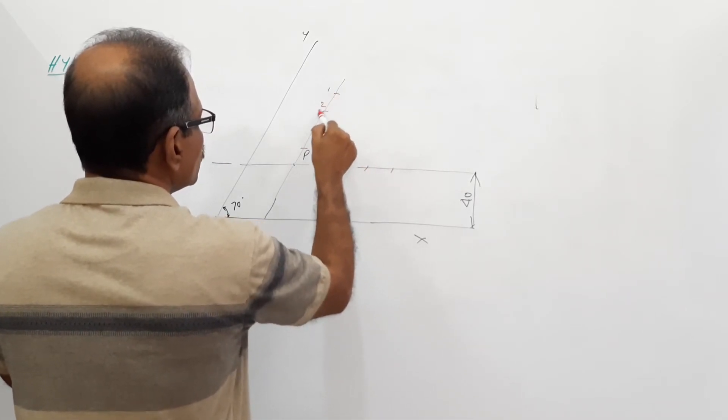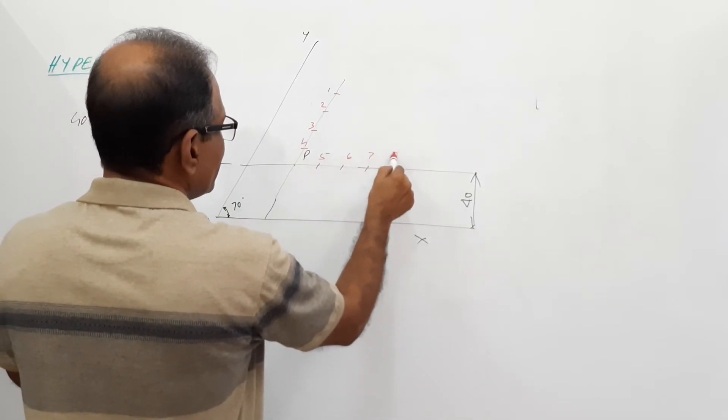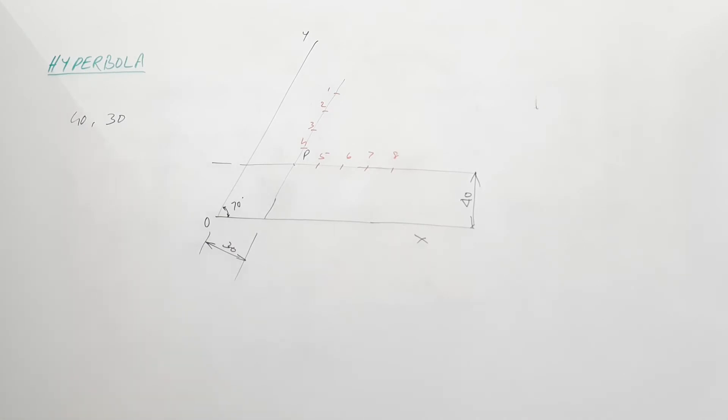Take points 1, 2, 3, 4, 5, 6, 7, 8. I am taking more points this time. I am going to draw lines.